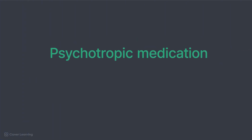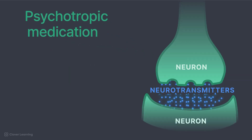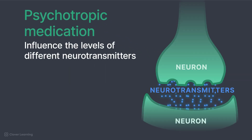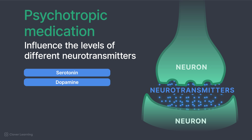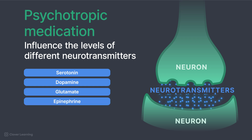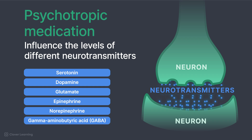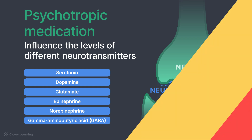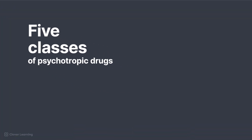A psychotropic medication can be defined as any drug that affects behavior, mood, thoughts, or perception. Psychotropics influence the levels of different neurotransmitters — the chemical messengers in the brain — such as serotonin, dopamine, glutamate, epinephrine, norepinephrine, and gamma-aminobutyric acid, or GABA. There are five main classes of psychotropic drugs.